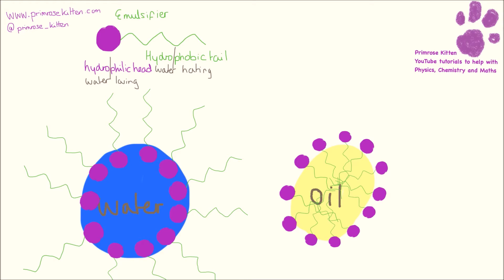Now, what the examiners are going to be expecting to see in this type of question is an explanation of the structure of an emulsifier — what the hydrophilic and hydrophobic parts are, where they are, and what they do. And then an explanation of how a mixture is formed, with the hydrophobic tails on the outside and the hydrophilic heads dissolved in different parts of the mixture.